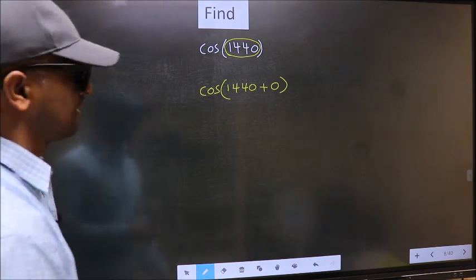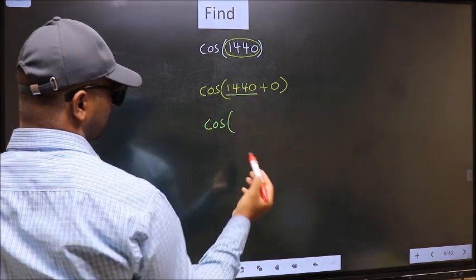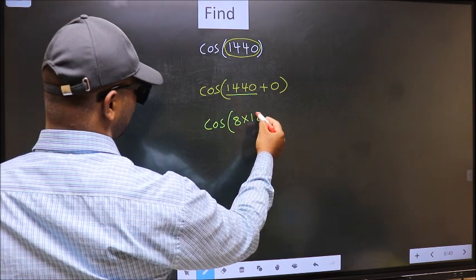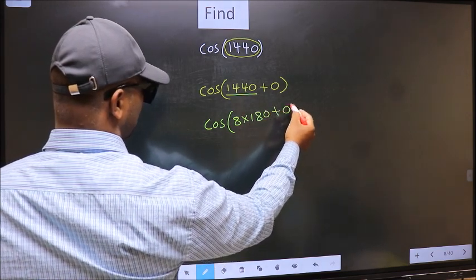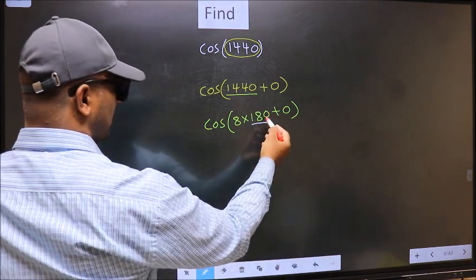Next, cos in place of this now we should write 8 into 180 plus 0. Next here we have 180.